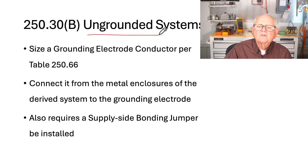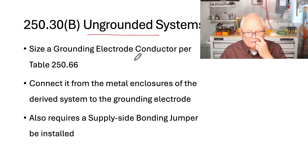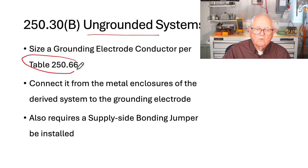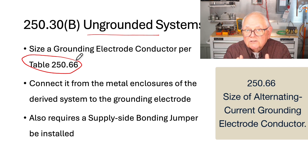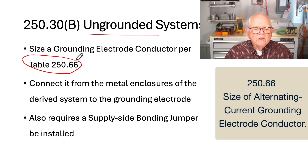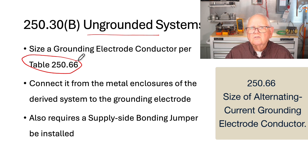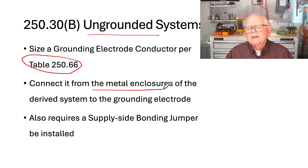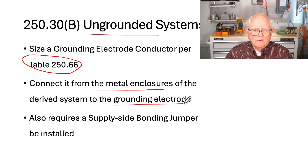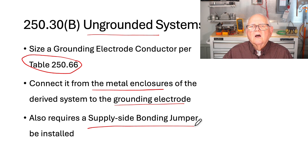What if you have an ungrounded system? You still have to have a grounding electrode conductor, sized from Table 250.66 based on the size of the derived phase conductors. However, you're not grounding your distribution system — what you're doing is connecting the metal enclosures of the separately derived system to a grounding electrode. That is the purpose of the grounding electrode conductor. It also requires a supply side bonding jumper on the supply side of the disconnecting means and overcurrent protection.